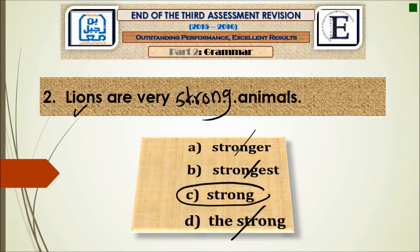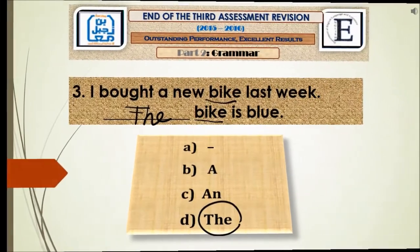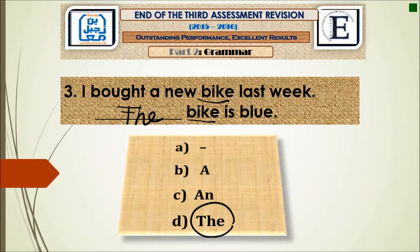Question number three: 'I bought a new bike last week. ___ bike is blue.' Since bike was mentioned before in the previous sentence, we use the definite article the. So the answer is the: 'The bike is blue.'